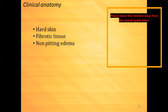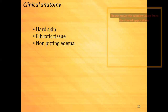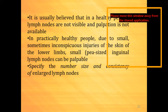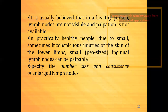Now we come to the clinical anatomy — the last objective of this lecture. There are three important clinical aspects: hard skin, fibrotic tissue, and non-pitting edema. It is usually believed that in a healthy person, lymph nodes are not visible and palpation is not possible. However, in lean people, due to small or inconspicuous injuries of the skin of the lower limbs, small or pea-sized inguinal lymph nodes can be palpable.